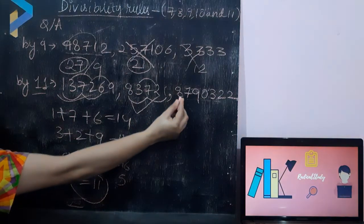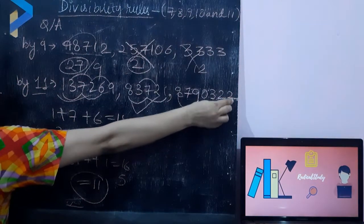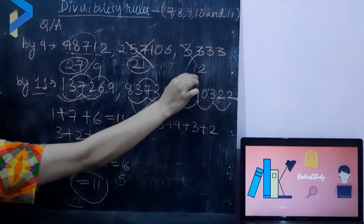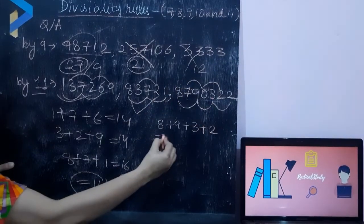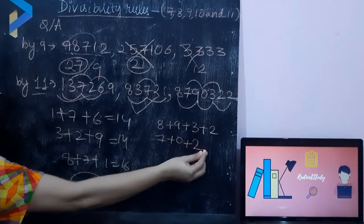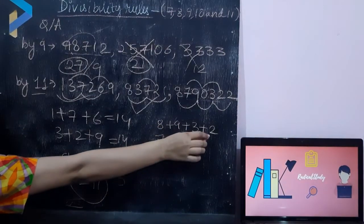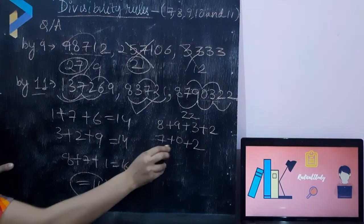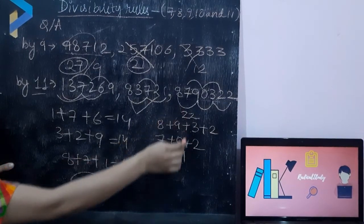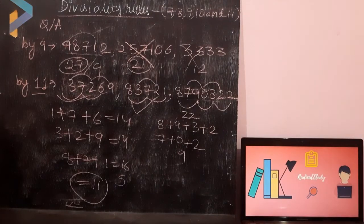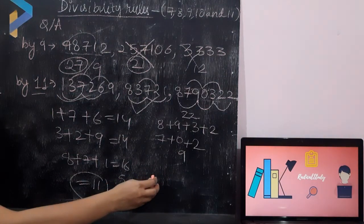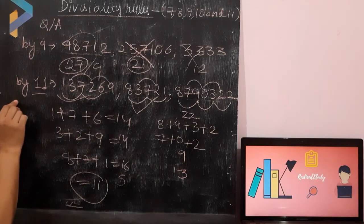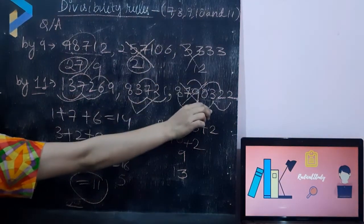Checking the next number: odd places — 8 plus 9 plus 3 plus 2; even places — 7 plus 0 plus 2. Adding odd places: 8 plus 2 is 10, 10 plus 9 is 19, 19 plus 3 is 22. Even places: 7 plus 2 is 9. So 22 minus 9 is 13, which is not divisible by 11. Therefore this number is not divisible by 11.